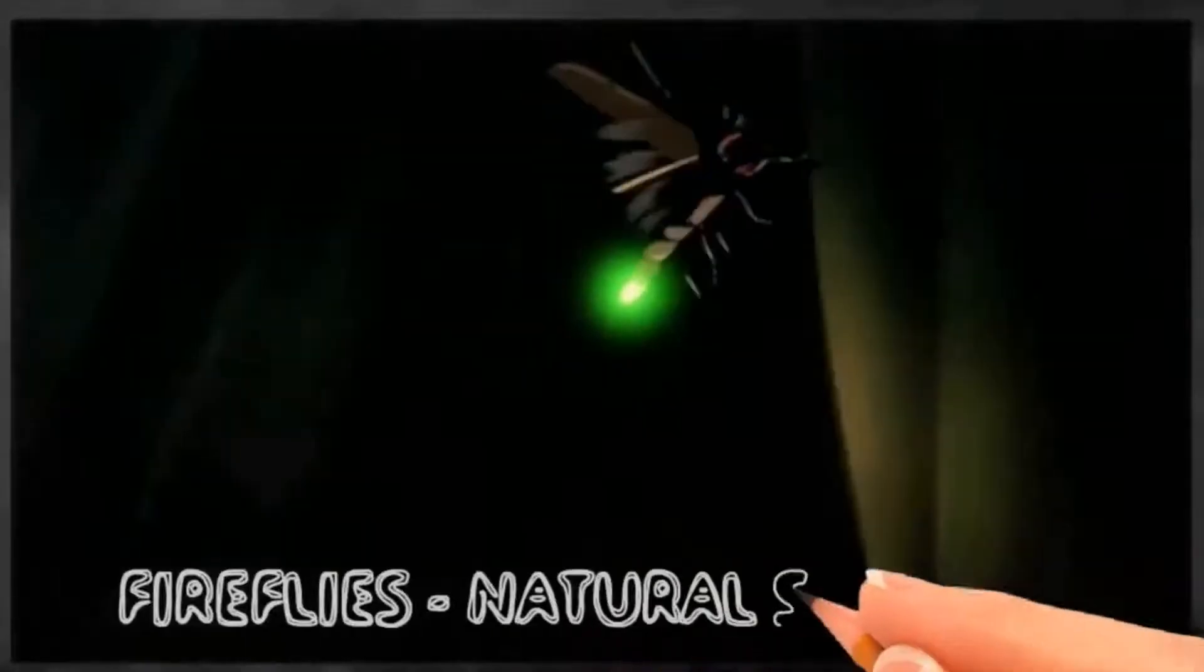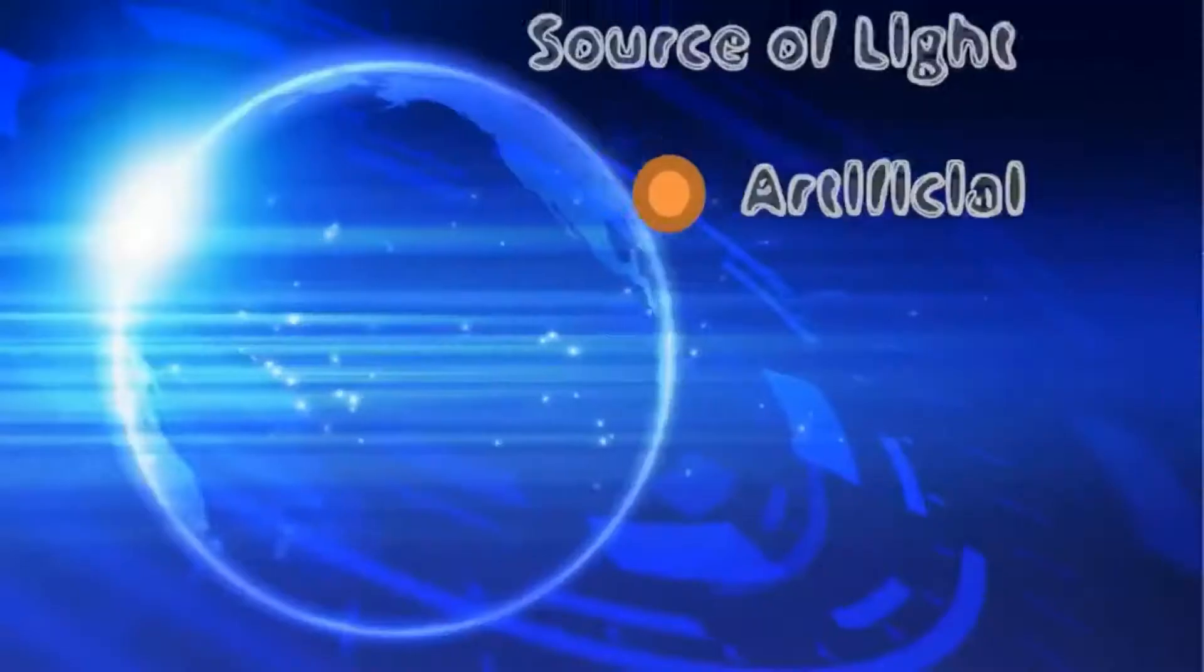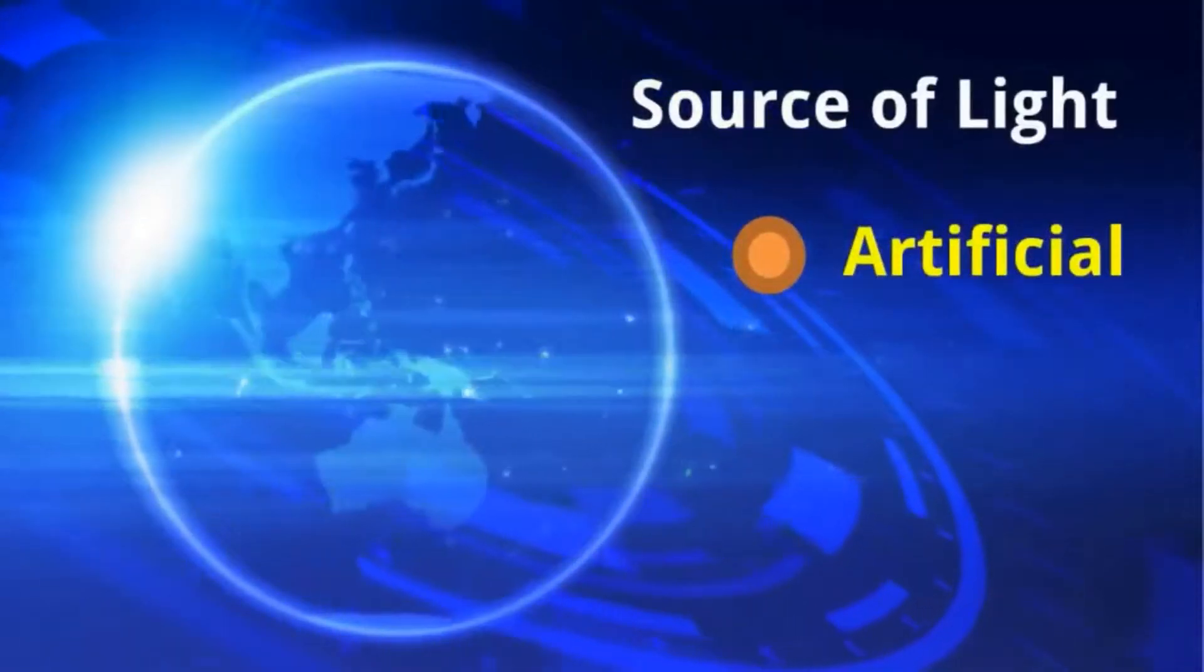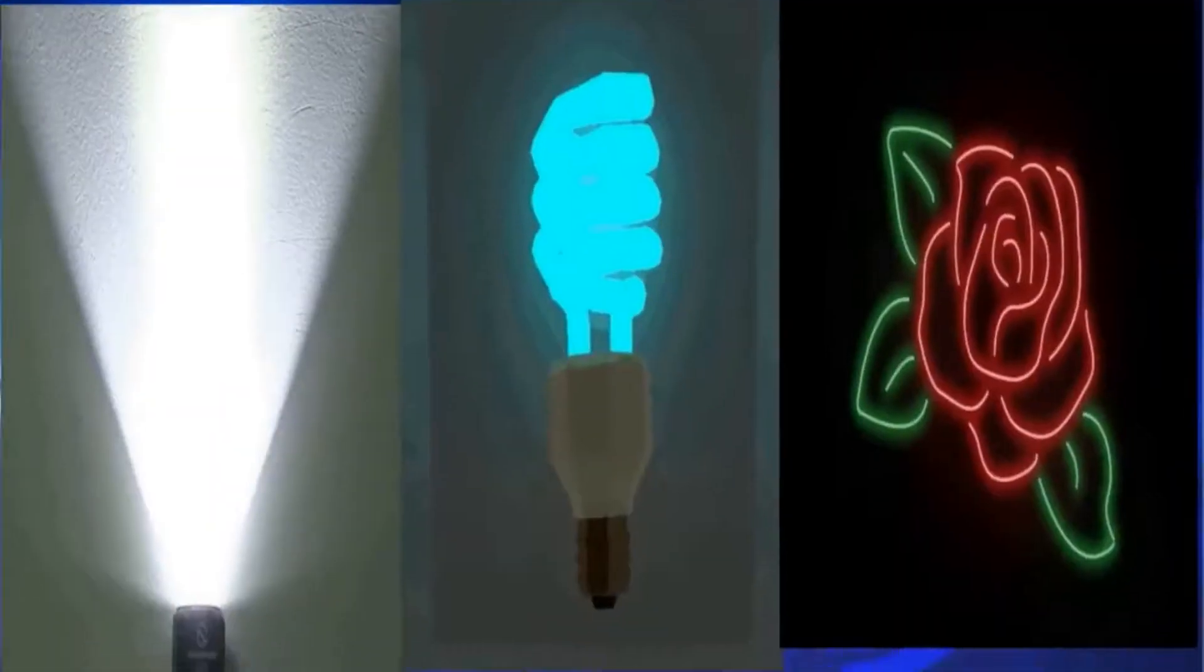Artificial light: there are so many varieties of artificial light available in the world, like torch, CFL, neon - there are so many varieties.